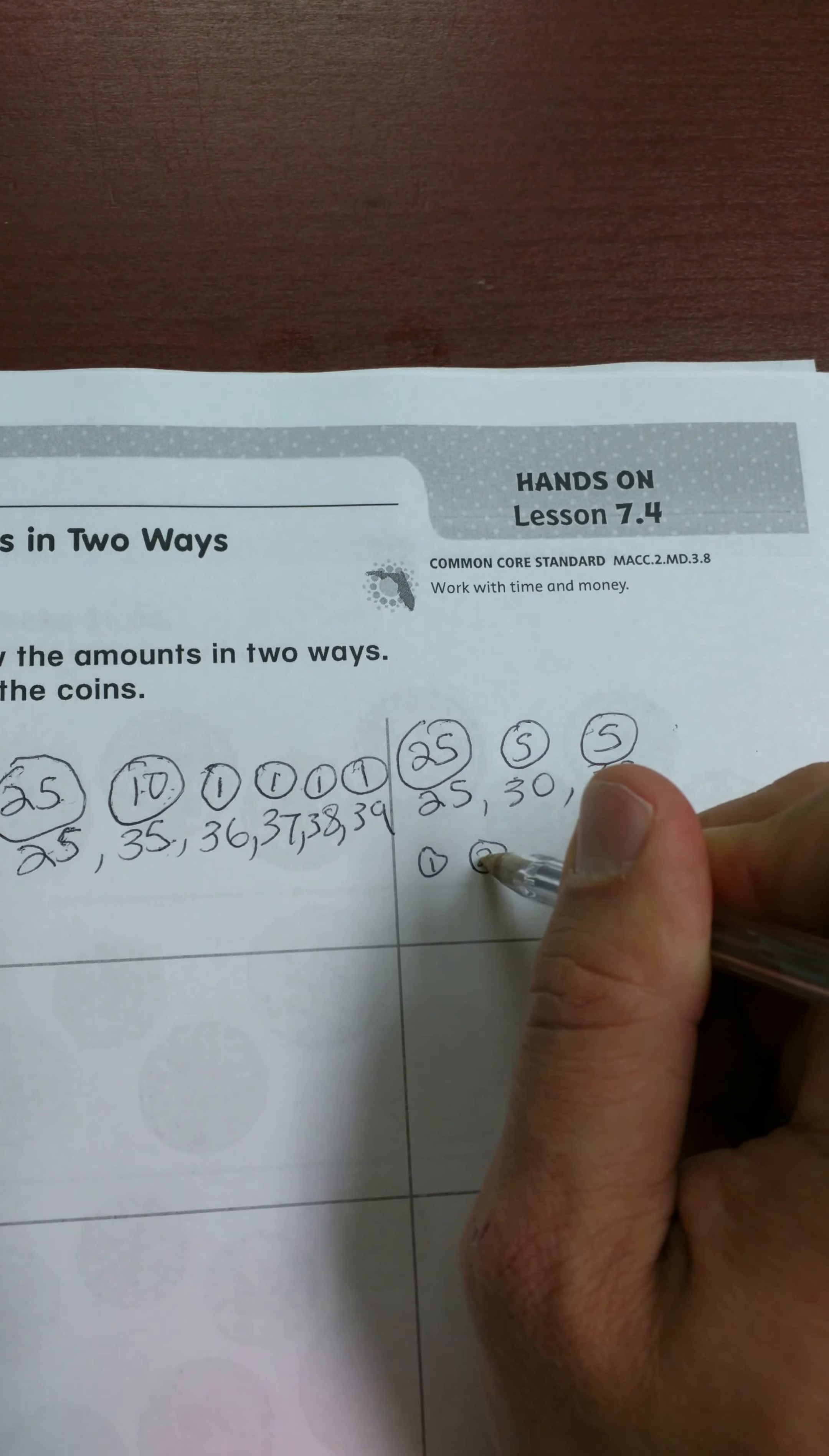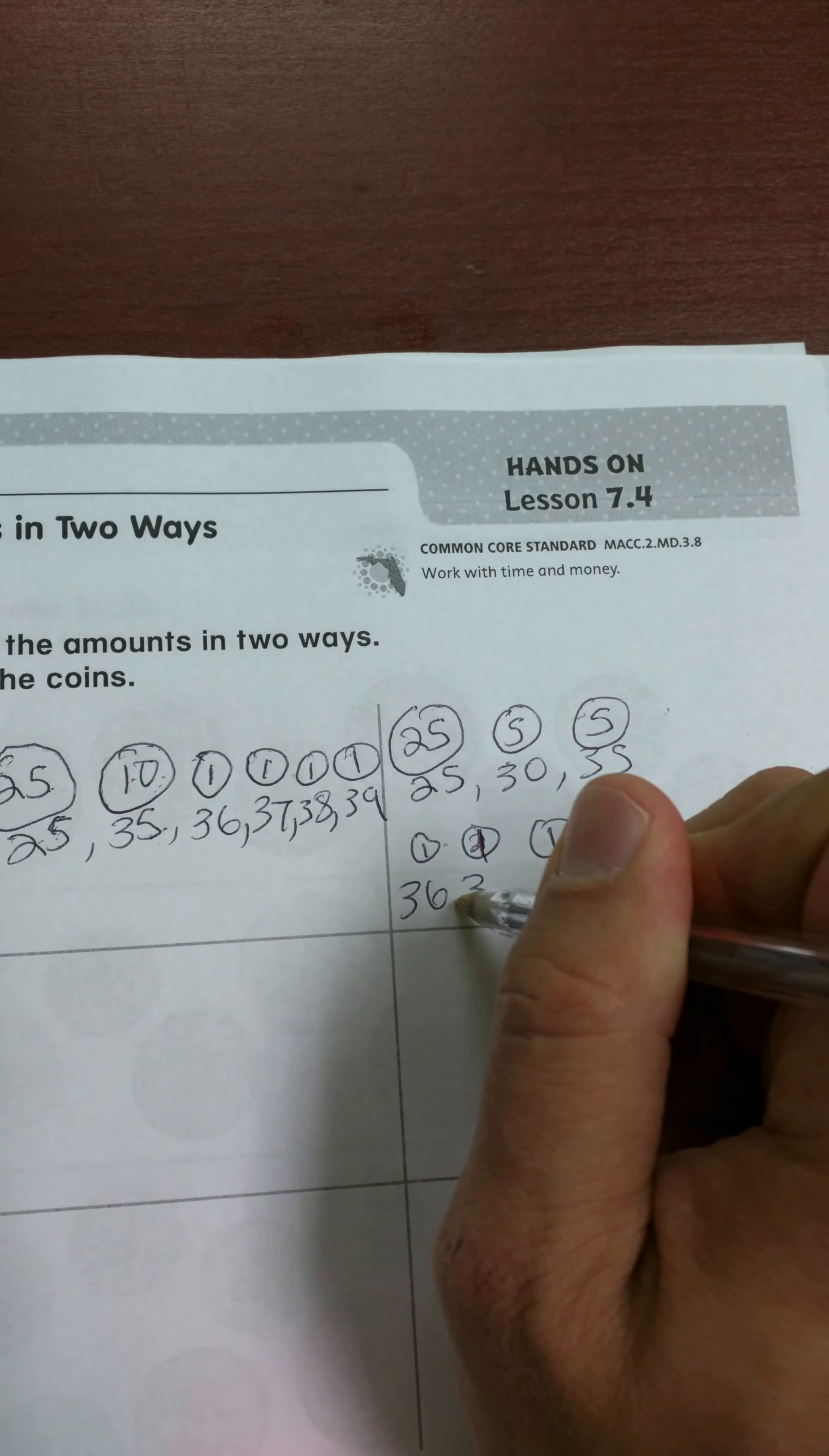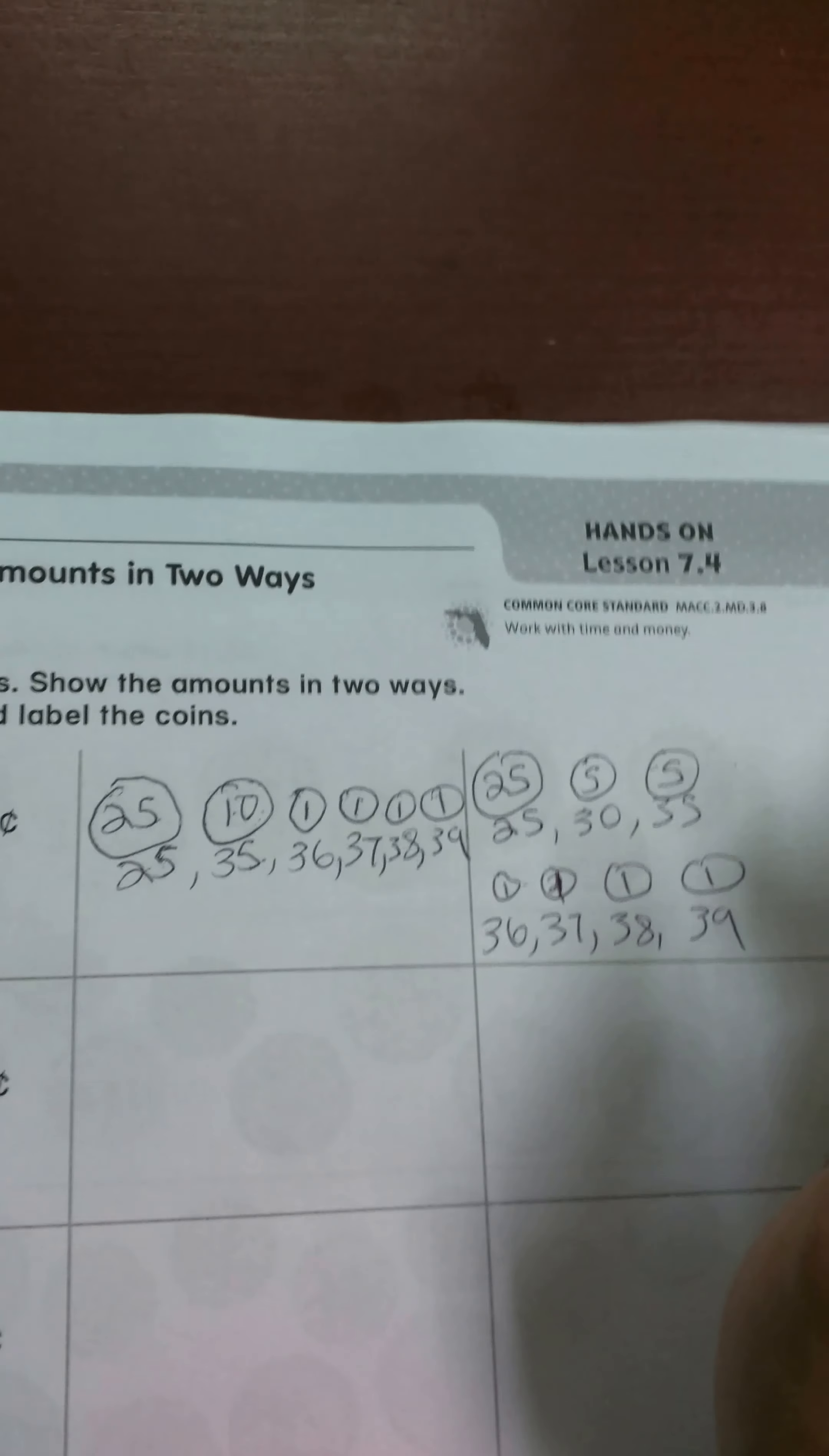One, oops, one, almost put two. One and then one, because each one of these is worth one, and that's why I didn't count up with those. So that's 36, 37, 38, and then 39. And that's how you show amounts in two ways.